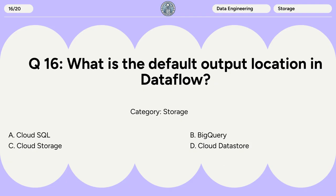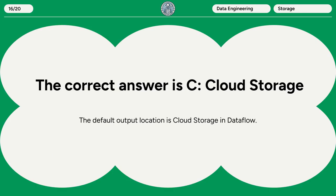Question 16: What is the default output location in Dataflow? A. Cloud SQL. B. BigQuery. C. Cloud Storage. D. Cloud Datastore. The correct answer is C. Cloud Storage. The default output location is Cloud Storage in Dataflow.